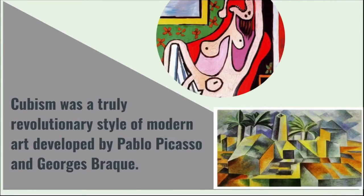Cubism is the next major example — the first style of abstract art that evolved at the beginning of the 20th century — and this was in response to a world that was changing with unprecedented speed. Georges Braque and Pablo Picasso are the artists who really developed this movement of abstract art.